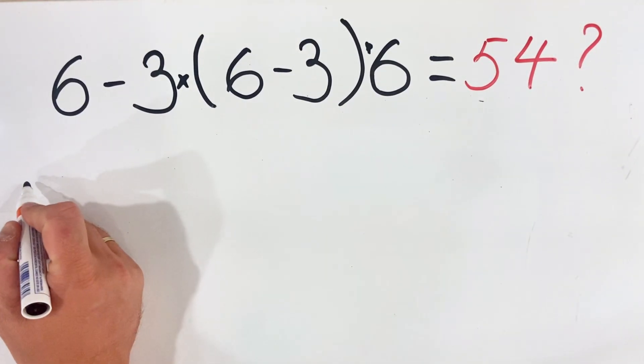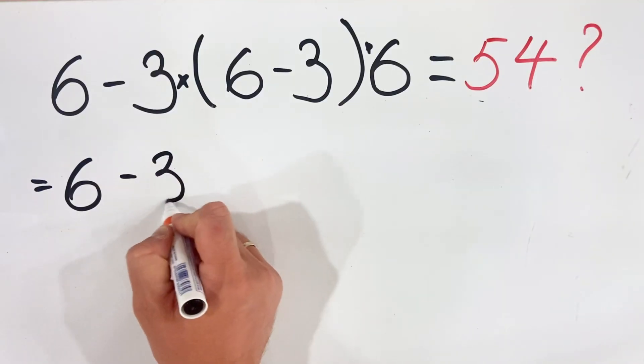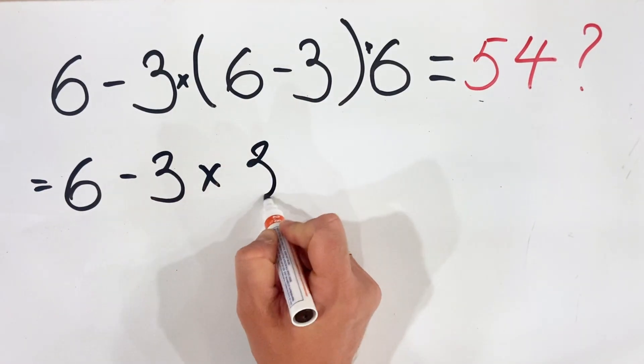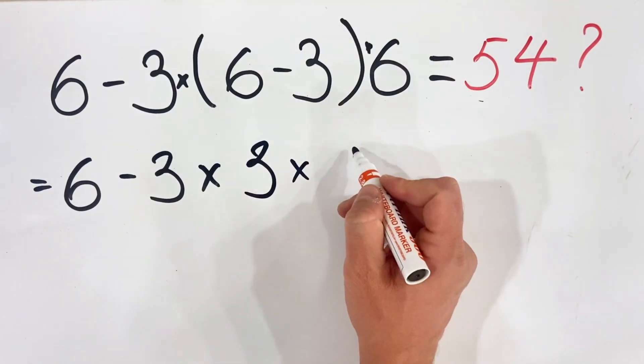So what we get is 6 minus 3 times, we have 6 minus 3 which is 3, multiplied by 6.